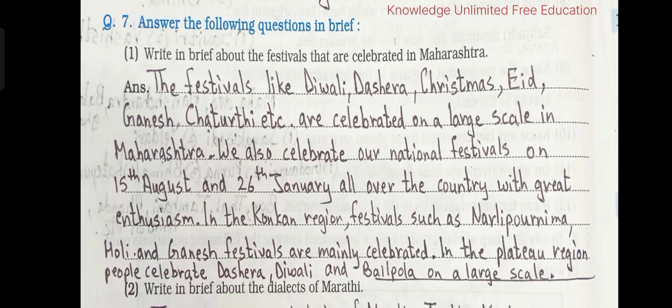Let's see the next part. Question number 7: Answer the following questions in brief. 1. Write in brief about the festivals that are celebrated in Maharashtra. Festivals like Diwali, Dashera, Christmas, Eid, Ganesh Chaturthi, etc. are celebrated on a large scale. We also celebrate national festivals on 15th August and 26th January. In the Konkan region, festivals such as Narlipurnima, Holi and Ganesh festival are mainly celebrated.